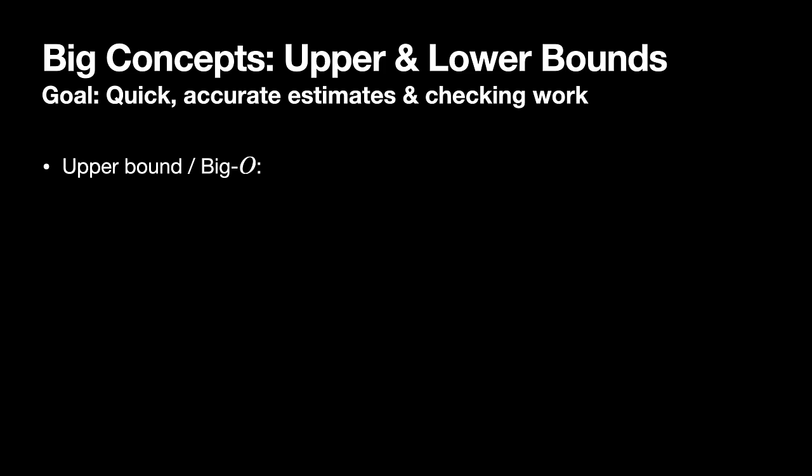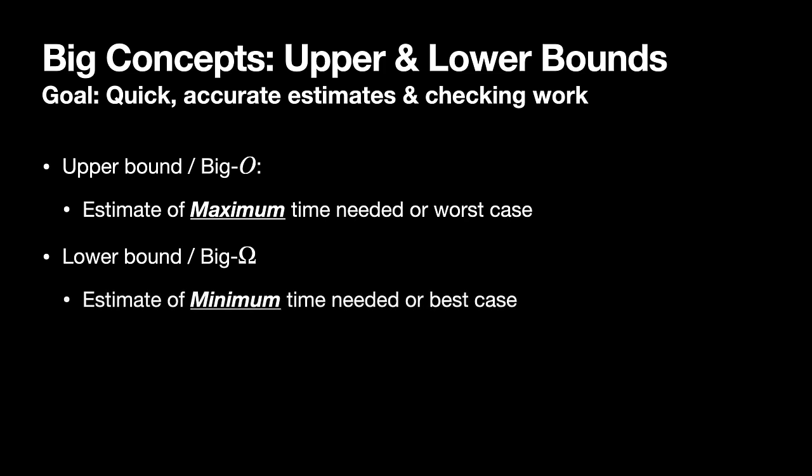Remember that we're oftentimes looking for an upper bound, a big O. We want to know, what's the worst case we could expect for how long something's going to take? Because oftentimes, we just want to know, is this worth waiting for? Or should I find some alternate method of doing something? So upper bounds are about a max moment, the time needed for the worst case. We're also sometimes interested in a lower bound, the big omega. What's the minimum amount of time or the best case? So really, the key points there are the concept of maximum and minimum.